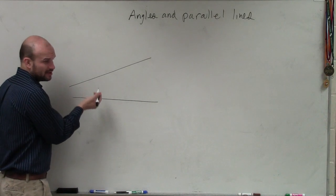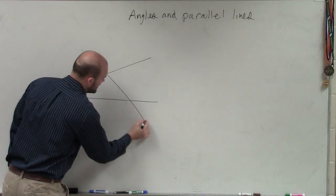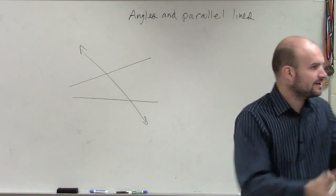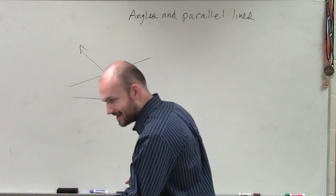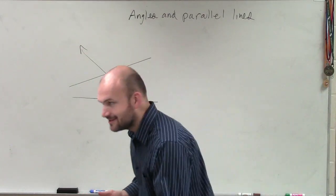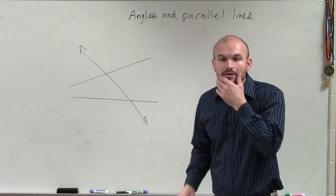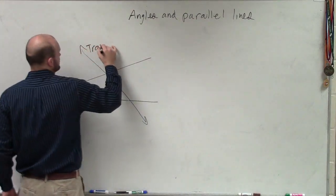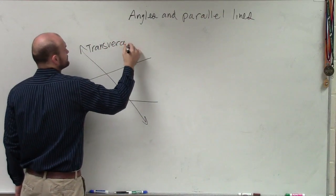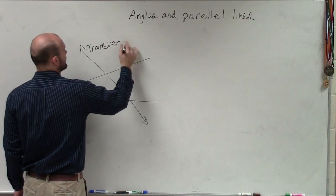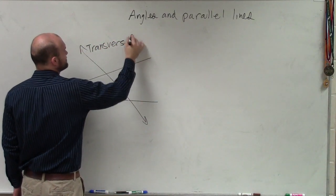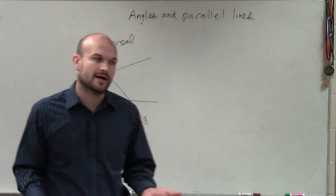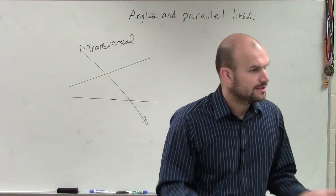A lot of times we talked about parallel lines. But then we said those lines were cut by a special type of line. Do you remember what we called that? Transversal. What was so nice about the transversal was that it created angles.